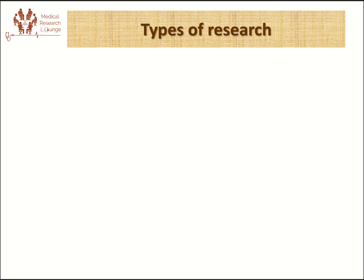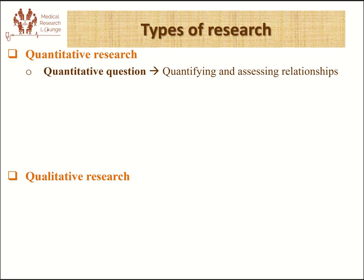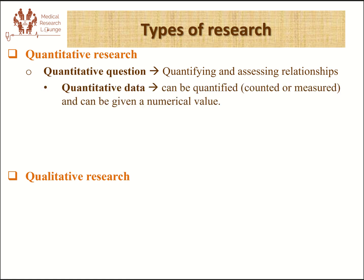There are two major types of research: the first one is quantitative and the other is qualitative research. These two types differ based on the type of research question at hand. If our research question is a quantitative question — which is interested in quantifying a problem or assessing the relationship of a problem with other factors — then it can only be answered by collecting quantitative data. That means data that can be counted or measured and given a numerical value. To analyze that, we need statistical analysis methods and tools. In the healthcare system, most of the time we are interested in quantifying a problem and assessing its degree or magnitude of relationship with other factors.